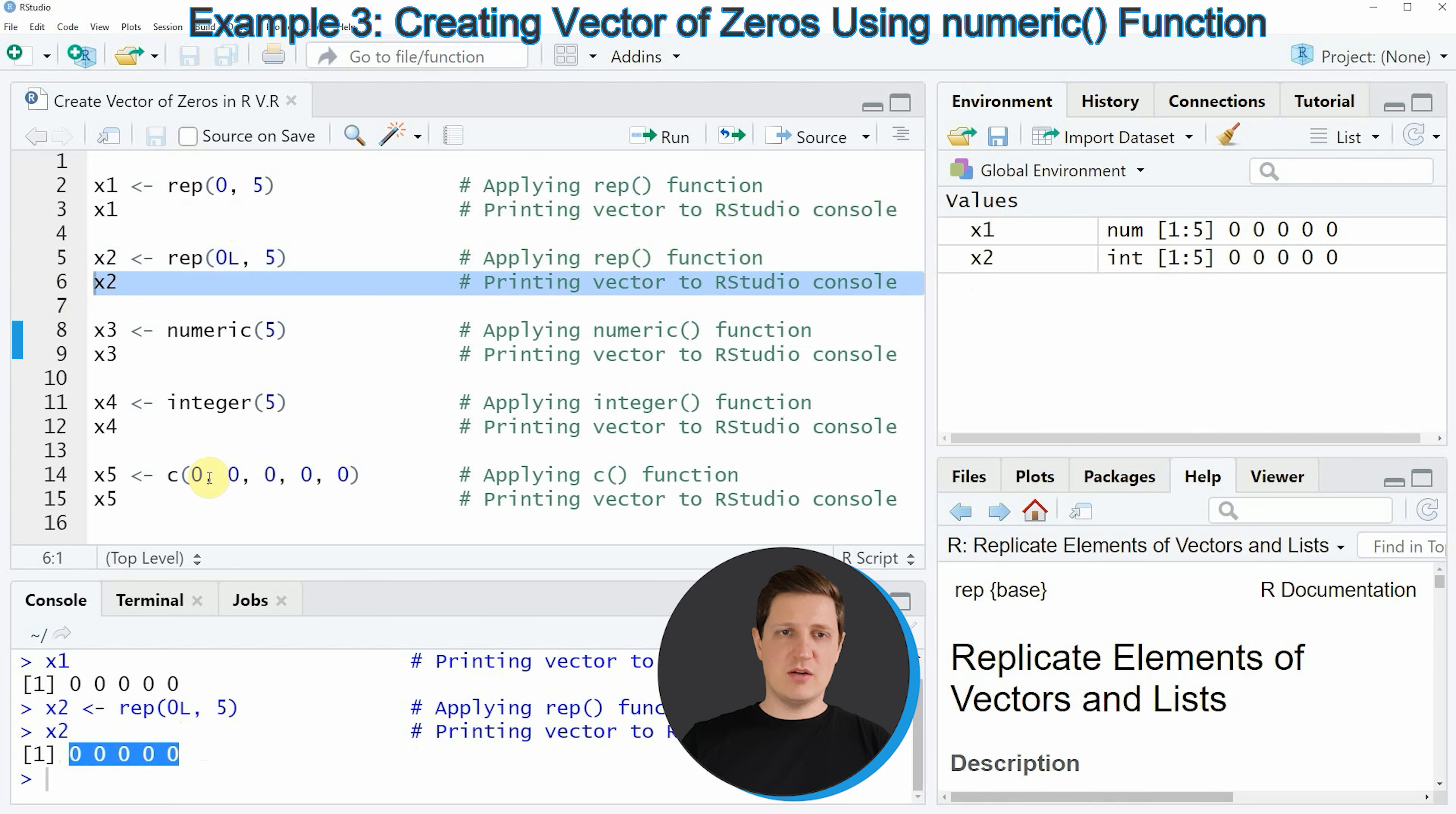Another alternative that I want to show you is based on the numeric function as you can see in line 8 of the code and within the numeric function we simply need to specify the number of times the value 0 should be contained in our vector.